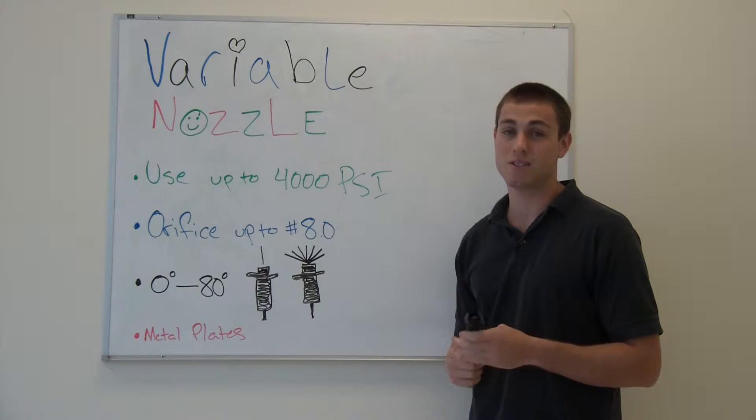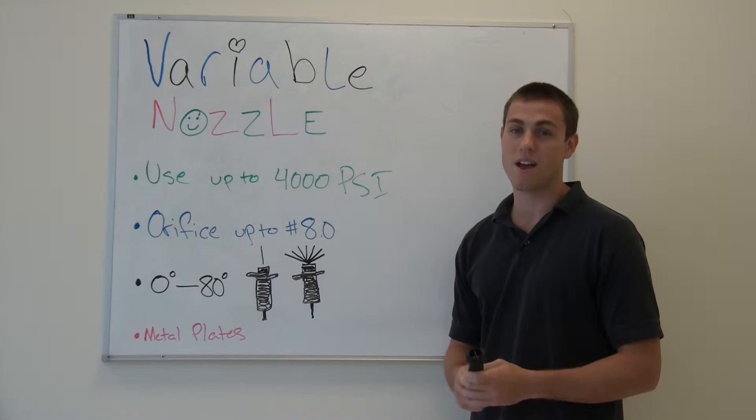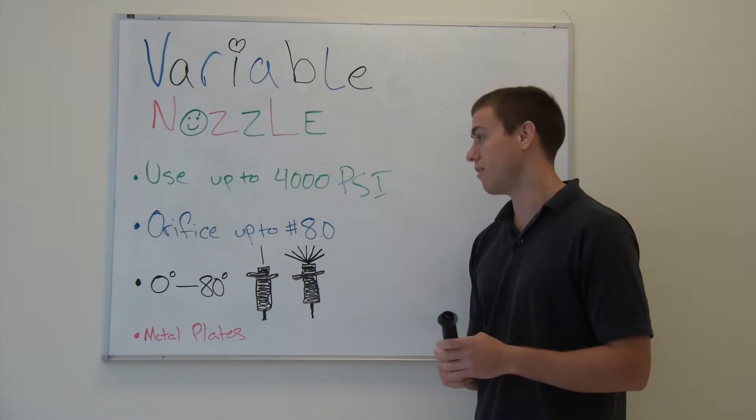We have two different types of variable nozzles ranging from 3,000 to 4,000 PSI, so whichever pressure you have, you can choose the correct variable nozzle for you.